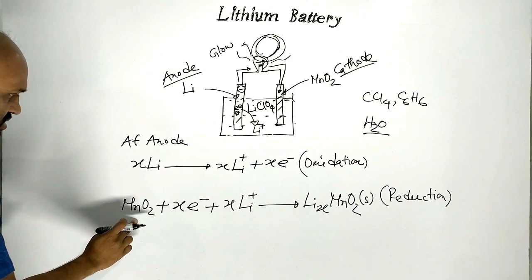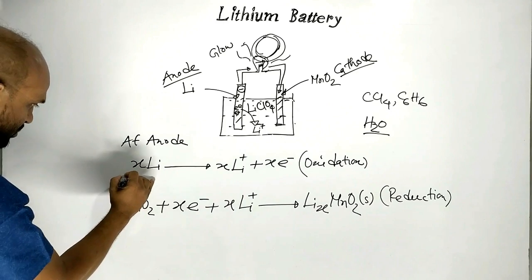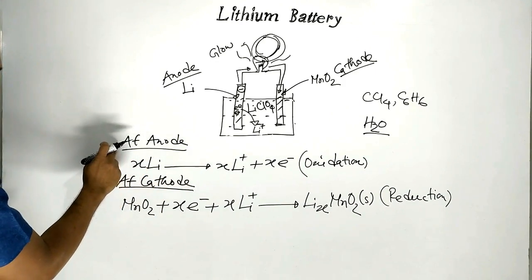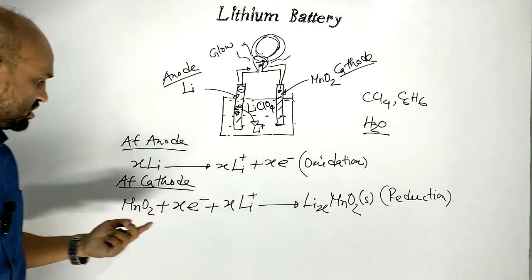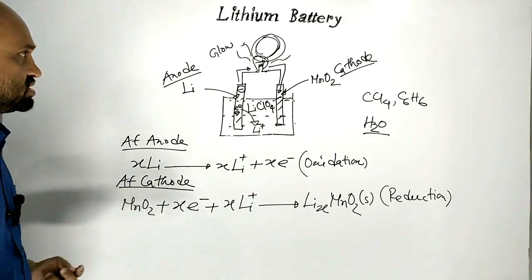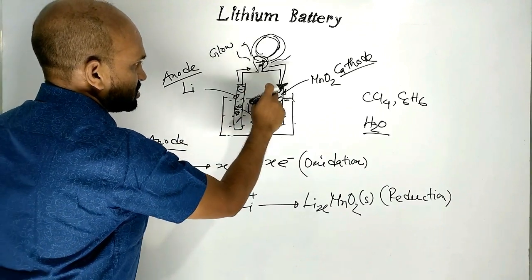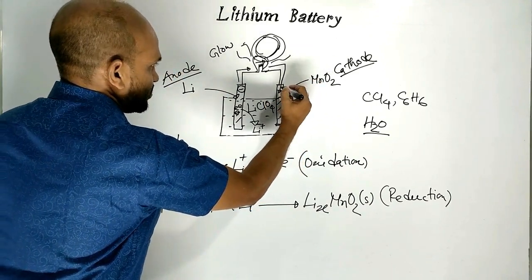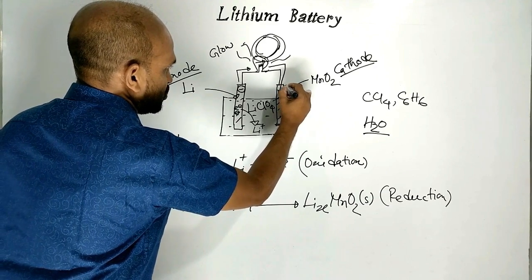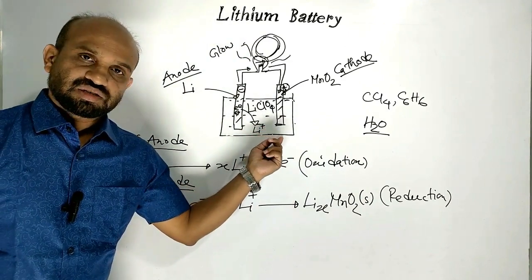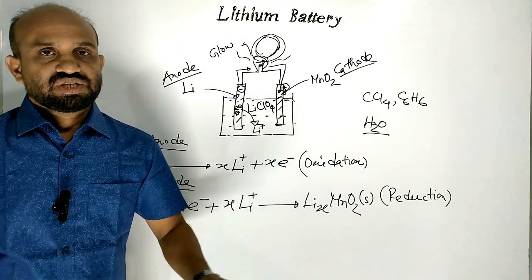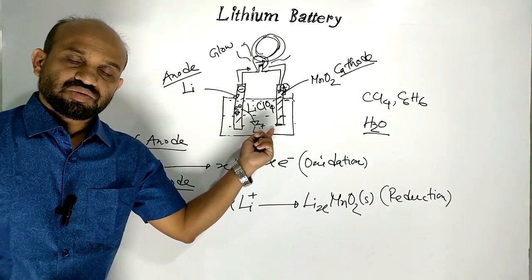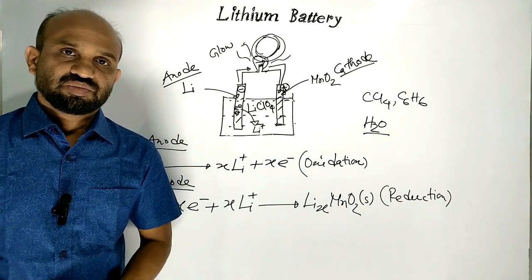This reaction is occurring at the cathode. At the anode, oxidation occurs; at the cathode, reduction occurs as electrons move through the manganese dioxide cathode. So the manganese dioxide electrode is a kind of cathode, which is denoted by a positive charge, because electrons are moving toward it.